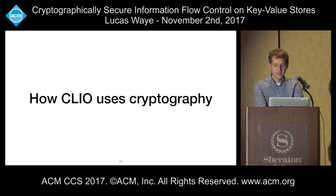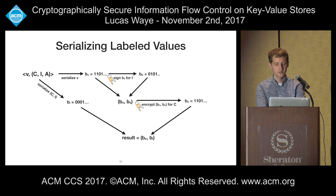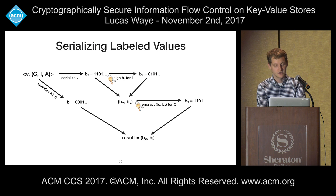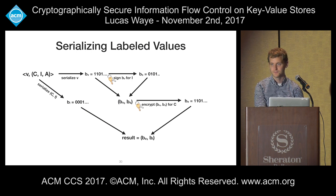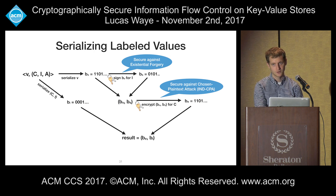Now let's dive into how Clio actually uses cryptography. Given a labeled value with value V and label components C, I, and A, to serialize a labeled value, Clio first serializes the value to bits. The bit string is then signed using the appropriate key for the integrity part of the label. The signature and serialized value are then encrypted together using the confidentiality part of the label. Finally, the label is serialized and concatenated with the ciphertext to be put on the store. Note that labels themselves are public information so they don't need to be encrypted. For Clio to be secure, the signature scheme must be secure against existential forgery and the encryption scheme must be secure against chosen plaintext attacks.